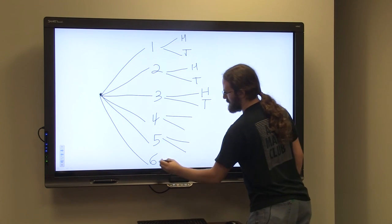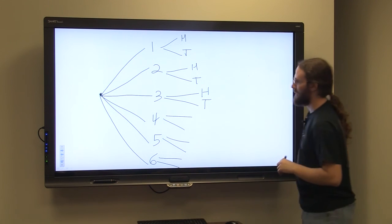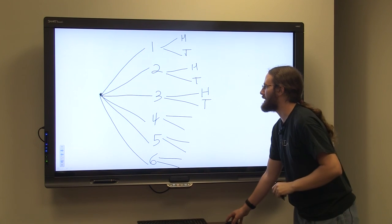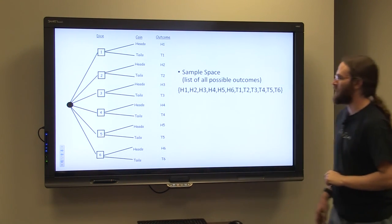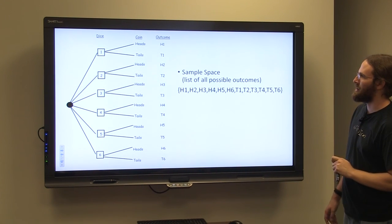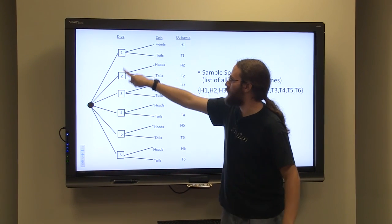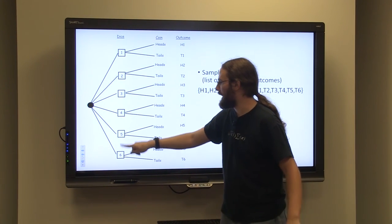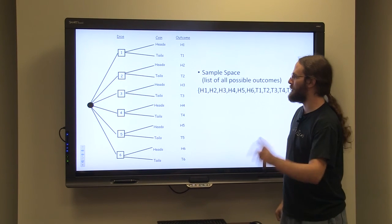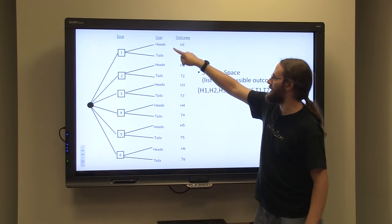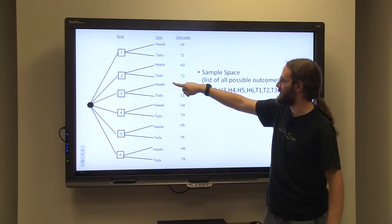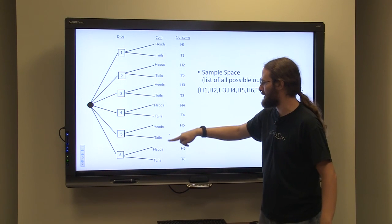My diagram here might not be the prettiest, so I decided to make a nicer one and embed it into my slideshow. Here you see you can roll a die and get a one, two, three, four, five, or six. And then you can flip that coin and get heads or tails for each outcome.